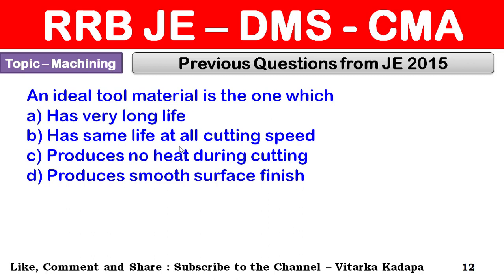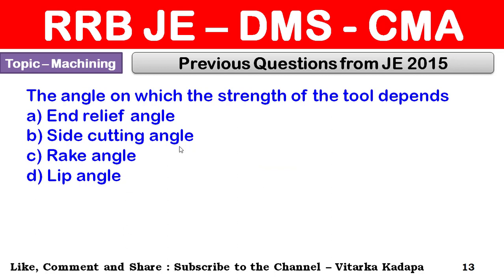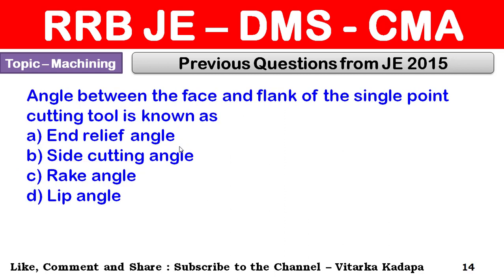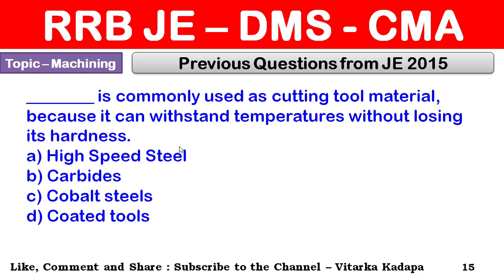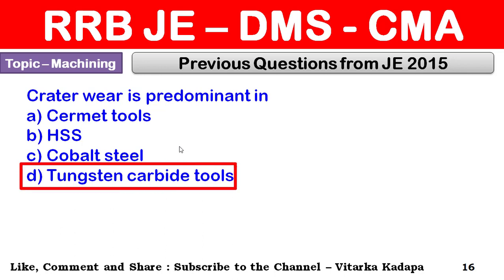An ideal tool material is the one which has the same life at all cutting speeds. The angle on which the strength of the tool depends is the rake angle. The angle between the face and flank of a single point cutting tool is known as the lip angle. High speed steels are commonly used as cutting tool material because they can withstand temperatures without losing hardness.